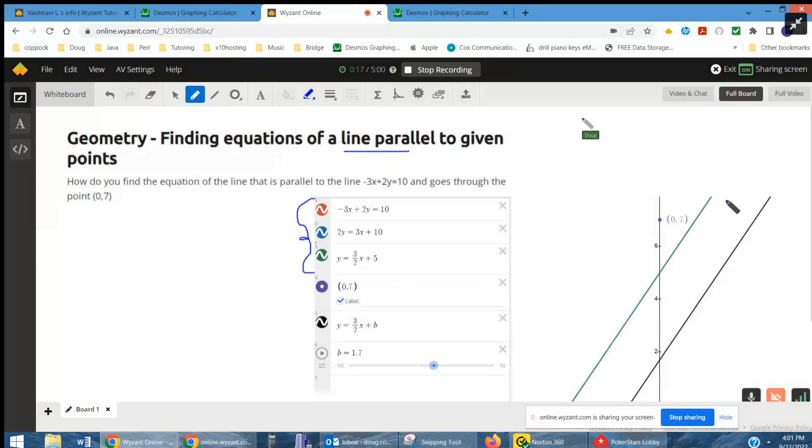Every one of those is this green line right here. So all I did to find the slope of that line is to solve for y by adding 3x to both sides, so 2y equals 3x plus 10, and then dividing both sides by 2 every term. So y equals 3 divided by 2 is 3 halves x, plus 10 divided by 2 is 5.